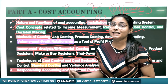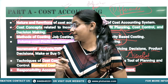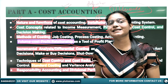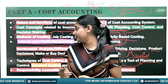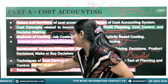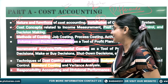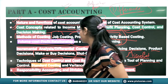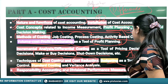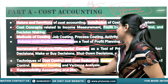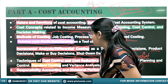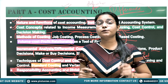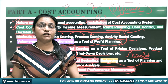Then Budgeting as a tool of planning — direct questions have been framed from the syllabus lines, so see previous year questions to understand how to analyze the syllabus. Then Standard Costing and Variance Analysis. Then the theory part: Responsibility Accounting and Divisional Performance Measurement — consider these as separate chapters so you can prepare one-pager notes for each.